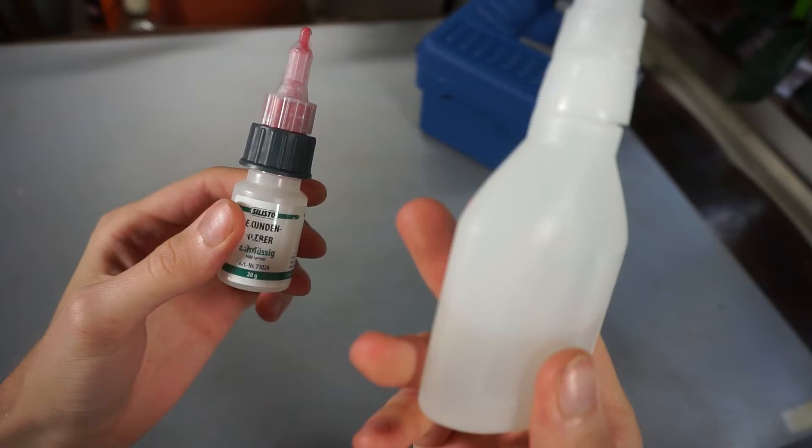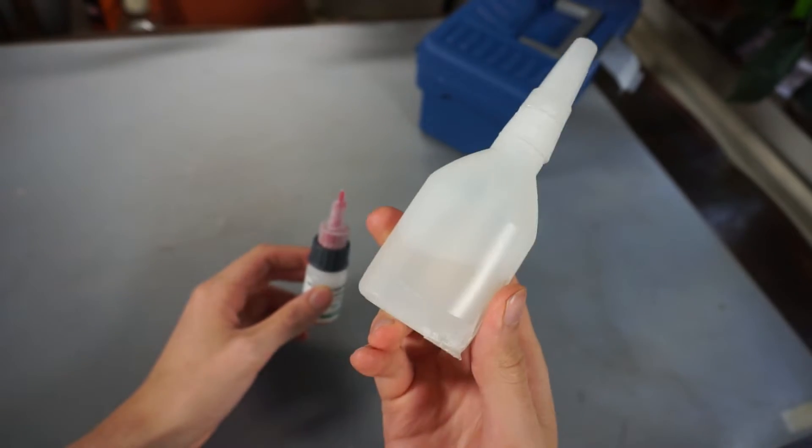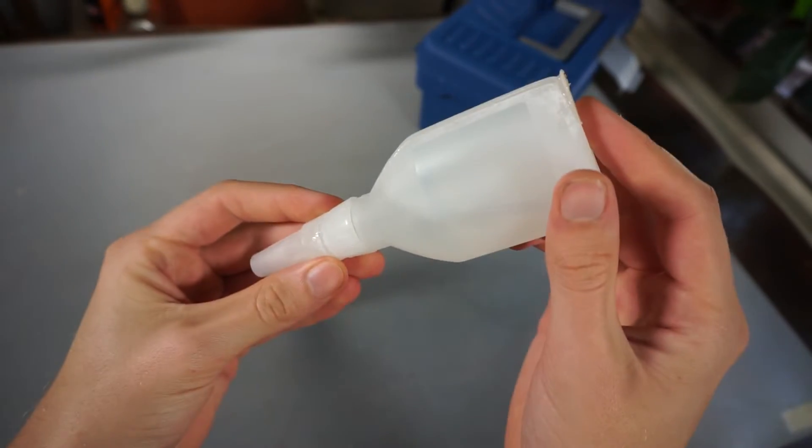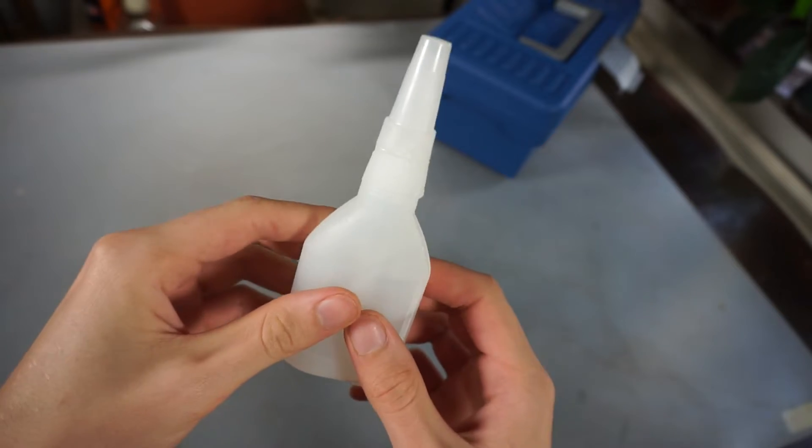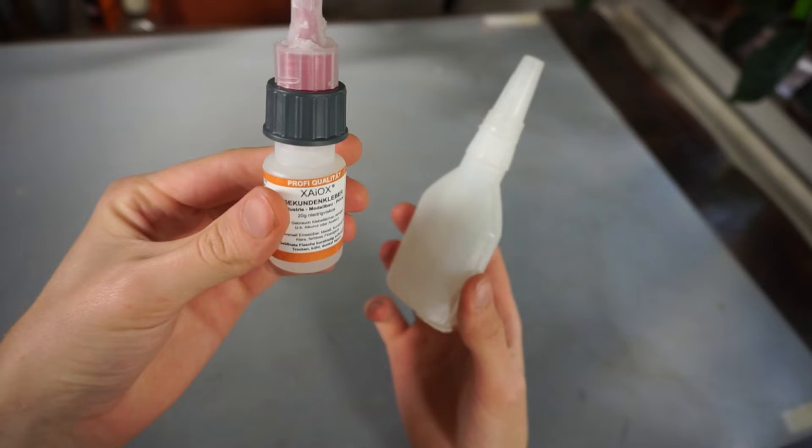And a bottle like this costs much less than these little bottles, so I had to find a solution to make it work. As I found out, there is a trick to turn your thick super glue into something much thinner, or you can turn thin super glue thicker. All you need is one bottle of thick super glue and one of very thin one.